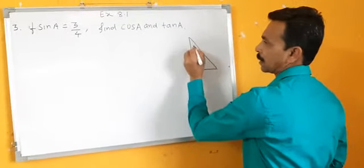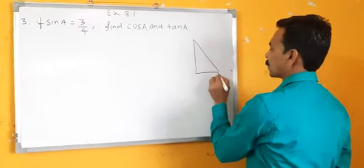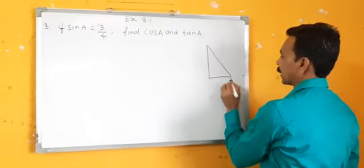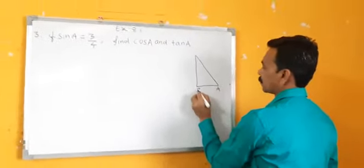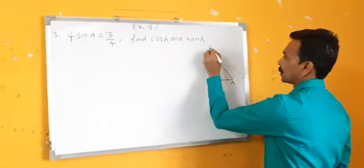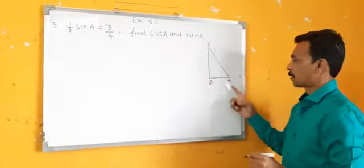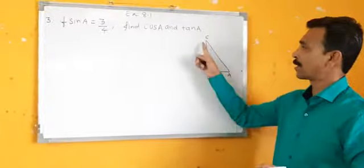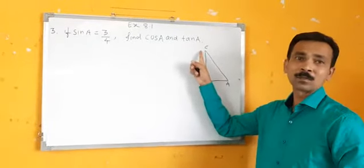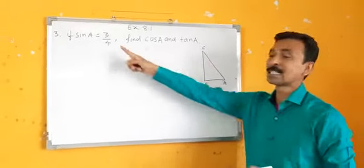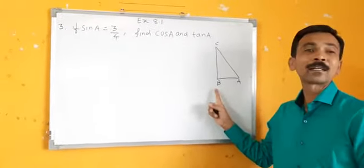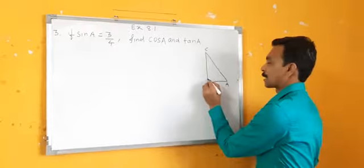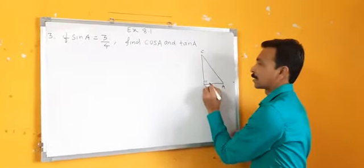This is a right angle triangle with vertices A, B, C. Why is A taken here? You can take the reference angle here as well. Because this is the reference angle, we cannot take the 90-degree vertex as the reference angle. This is 90 degrees.